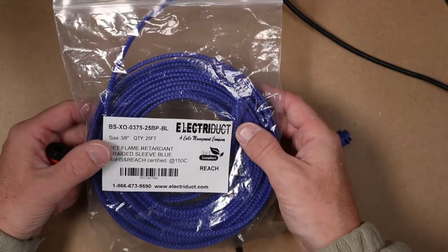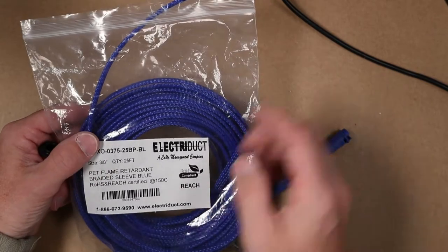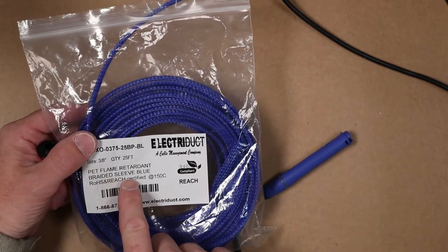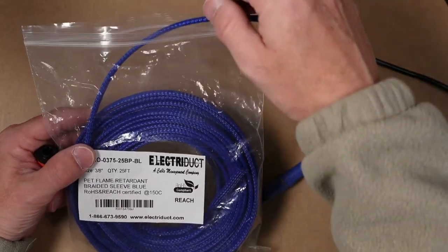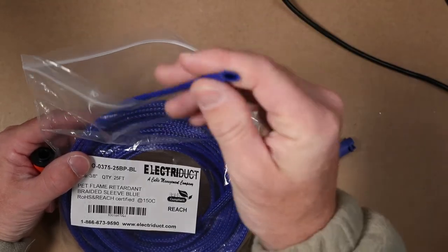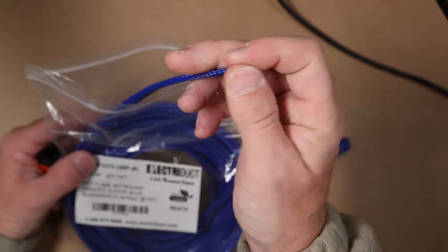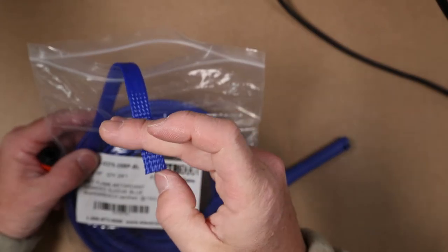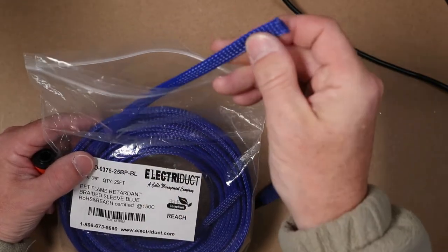So if you're looking to pretty up your quads, a lot of people are using this stuff. This is a flame retardant braided sleeve made out of a nylon-ish material. The issue with it is when you cut it, the ends will fray off, and I'll show you that in a moment.